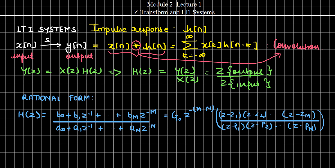This is very important because many times we don't know exactly how the system impulse response is given mathematically, and many times we just have the output corresponding to a particular input. So using the output and input only, we can determine the impulse response by taking the inverse Z-transform of Y(Z)/X(Z).